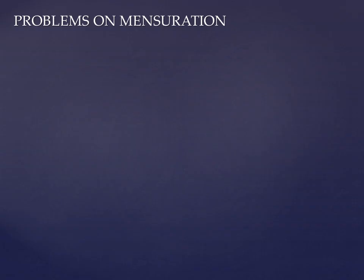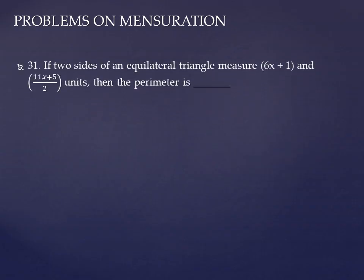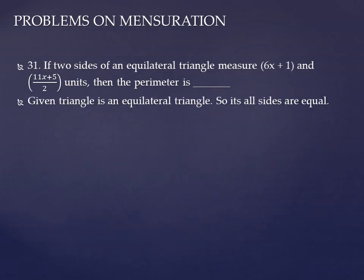Next question, question number 31 in your book: if 2 sides of an equilateral triangle measure 6x plus 1 and (11x plus 5) by 2 units, then what is the perimeter of the triangle? It is a simple one. They are given two sides of an equilateral triangle. An equilateral triangle means all three sides are equal. Since any two sides are also equal, we can equate the two given sides. So, 6x plus 1 is equal to (11x plus 5) by 2.